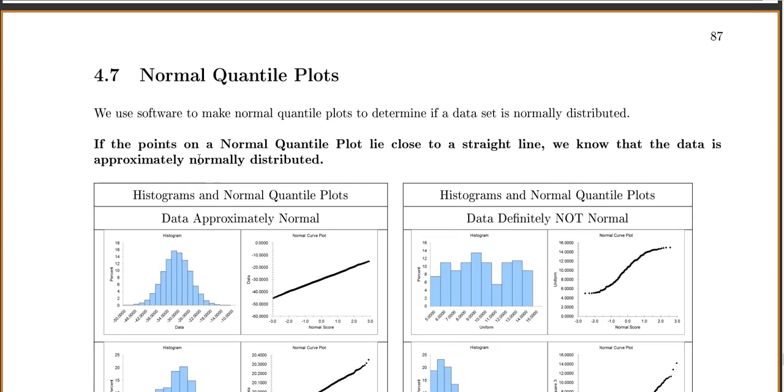In this section, we'll talk about normal quantile plots. We can use software to make normal quantile plots to determine if a data set is normally distributed. That's something we're often very interested in. We have a data set, and we want to say, does this seem like a normal distribution would work well to find probabilities for it or to somehow describe it?